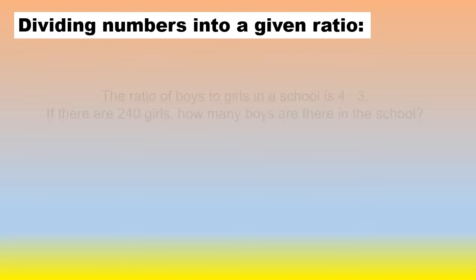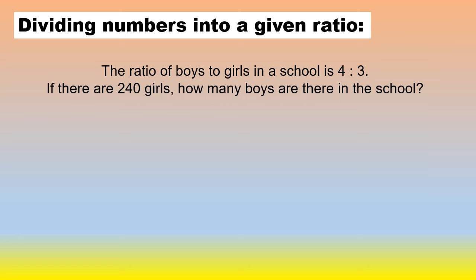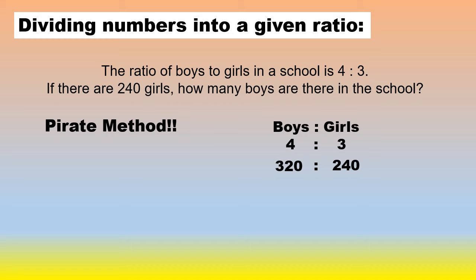Let's have a look at another example. The ratio of boys to girls in a school is 4 to 3. If there are 240 girls, how many boys are there in the school? With this one, you don't have to add the parts together. You're going to use the pirate method. You write up boys to girls is 4 to 3, underneath the girls you put 240. Then you say 240 divided by 3 times by 4 and that gives you 320 boys.